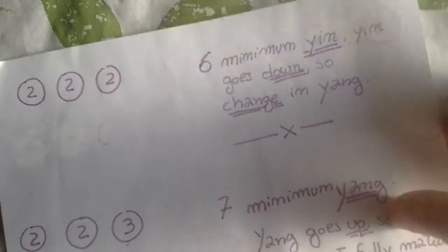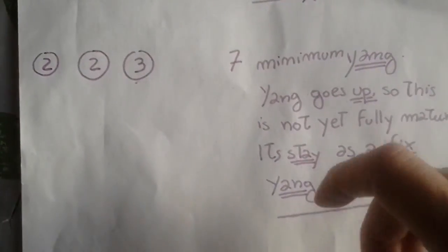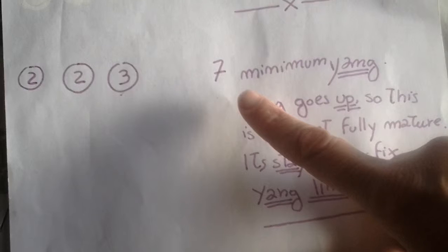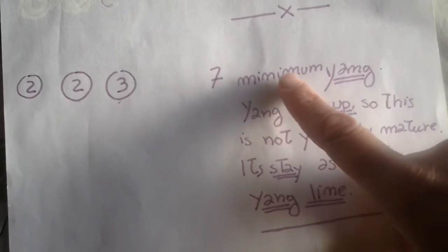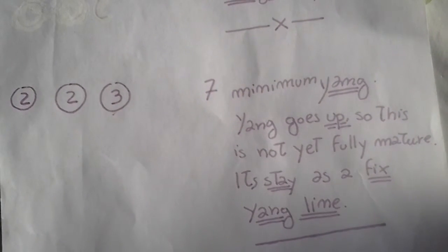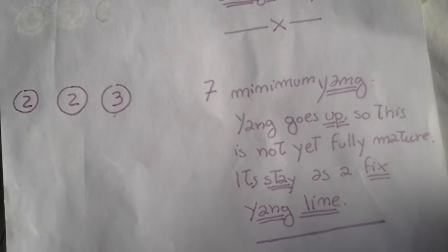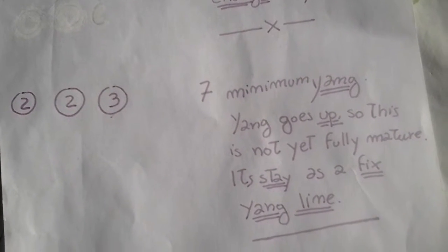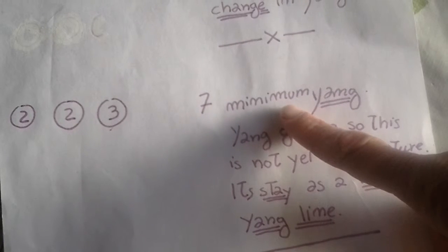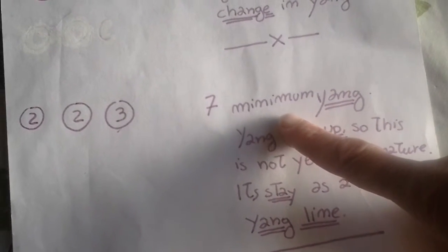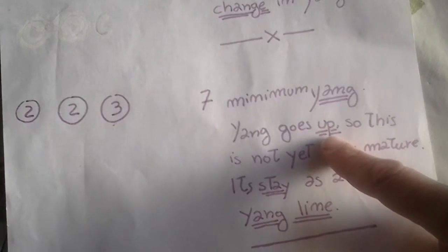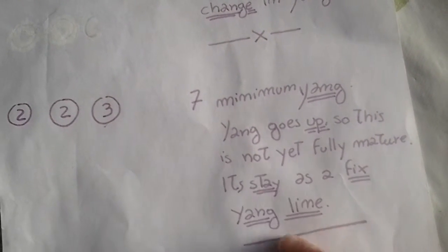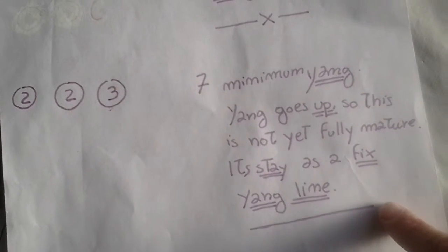Another possibility that can happen is that you have two, two, and three, which all together make seven. Seven is an odd number and is a yang number. This odd number, yang goes up. The maximum odd number we can have is nine, and that will be also the maximum of yang, because yang goes up. This is not nine, it's seven, it's a yang line, but it's not changing. It didn't reach its fullness yet. This is the minimum yang line that you can have. Yang goes up, so this is not a fully mature line. It stays as a fixed yang line, and you will draw it like this, a straight line.